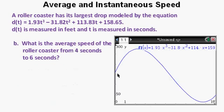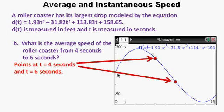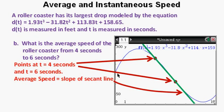Now we'll move on to part B. What is the average speed of the roller coaster from 4 seconds to 6 seconds? We'll bring back our graph of the roller coaster height versus time. Here are the points on the graph at 4 seconds and at 6 seconds. Again, the average speed is the absolute value of the slope of the secant line containing these two points.